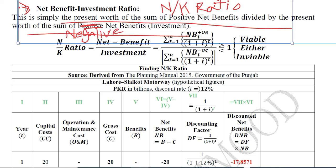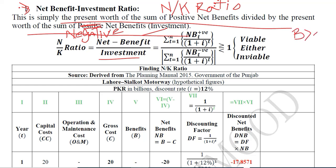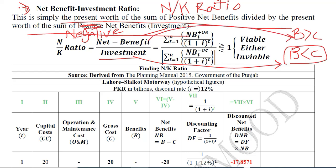This is the ratio of the sum of positive net benefits to the sum of negative net benefits. The positive net benefits we call 'net benefits' and the negative net benefits we call 'investment.' This is because when benefits are greater than costs we have positive net benefits, and when costs exceed benefits the investment component is bulkier than the benefit side.